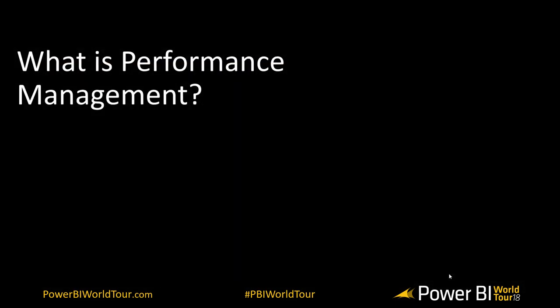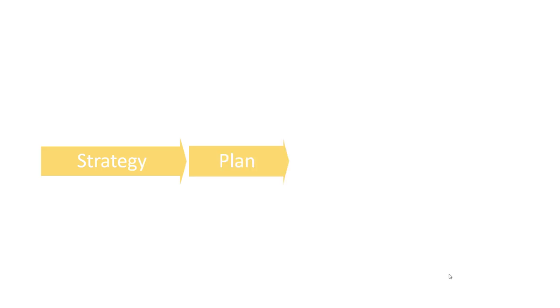So what is performance management? In our definition, performance management is a feedback cycle that covers initially setting the strategy, planning, putting together an operational plan, monitoring this plan, and then steering in case there are variances to the plan.